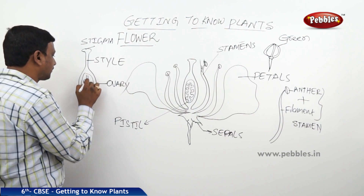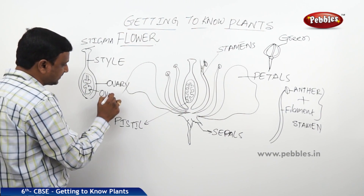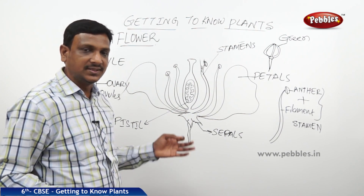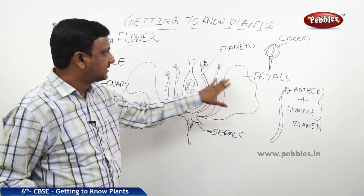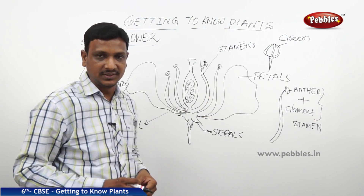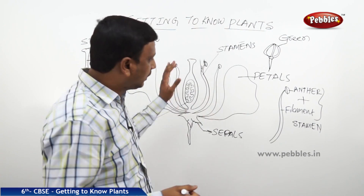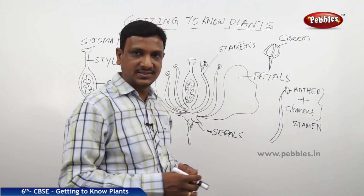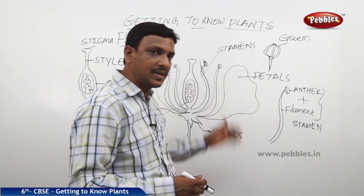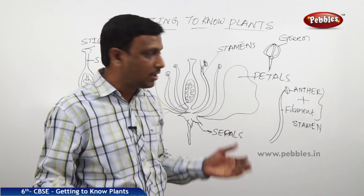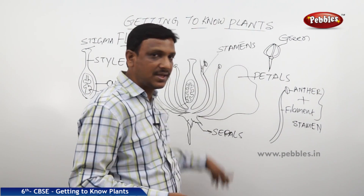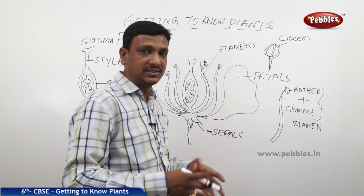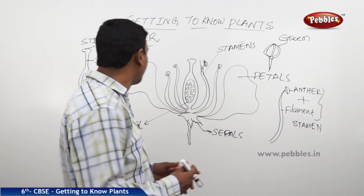A typical flower consists of sepals, petals, stamens, and pistil. This is a complete flower — one that has all the parts. But practically, some flowers may not have stamens and have only pistil, petals, and sepals. Some flowers may not have pistils and have only stamens, petals, and sepals. But some flowers may have all parts: stamens, pistil, petals, and sepals.